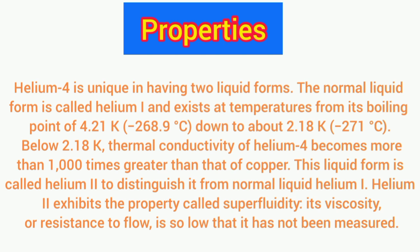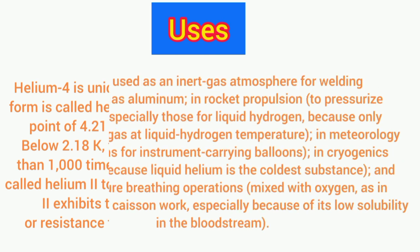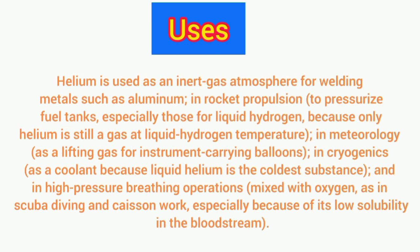Below 2.18 K, the thermal conductivity of helium-4 becomes more than a thousand times greater than that of copper. This liquid form is called helium-II to distinguish it from normal liquid helium-I. Helium-II exhibits the property of superfluidity — its viscosity, or resistance to flow, is so low that it has not been measured.